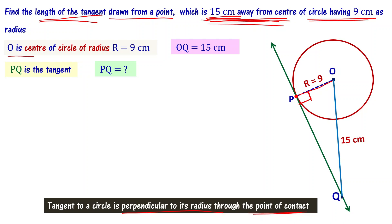The radius to the point of contact and the tangent meet at 90 degrees, so we can say that this particular triangle OPQ is a right angle triangle. We have two sides: 9 centimeters and 15 centimeters, and we need to find the third side.